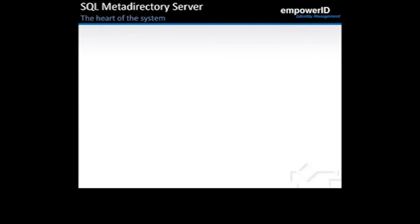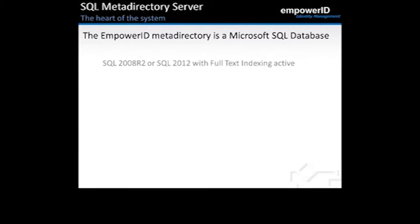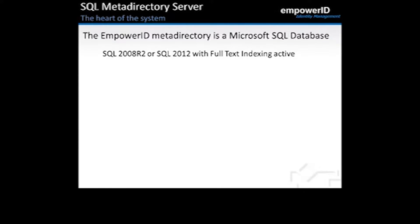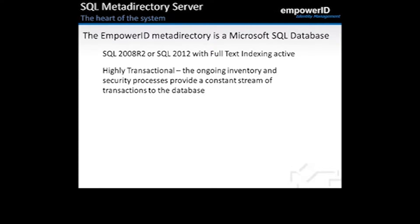The first server is the SQL Meta Directory server, the heart of the system. The Empower ID Meta Directory is a Microsoft SQL database. It requires SQL 2008 R2 or 2012 with full-text indexing active. It's important to have full-text indexing active because every search we do within Empower ID user interfaces is going to be a full-text index search. The Meta Directory is also a highly transactional database.